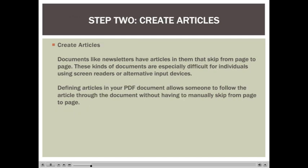The second step in creating an accessible PDF document is to create articles within your document. Not all documents need articles created with them. If your document is very sequential in nature, you don't need to create articles. However, documents like newsletters that have an article starting on one page and picking up on another page do need articles. That way, somebody using a screen reader can access the articles feature and read the entire article at once without skipping from page to page.